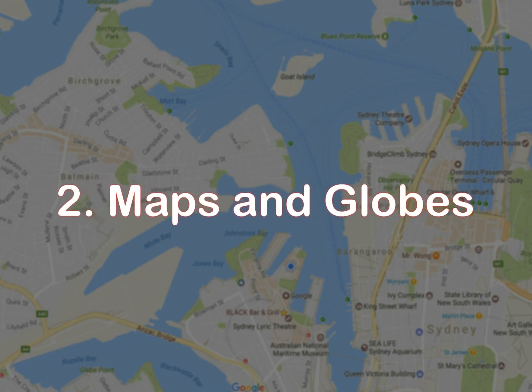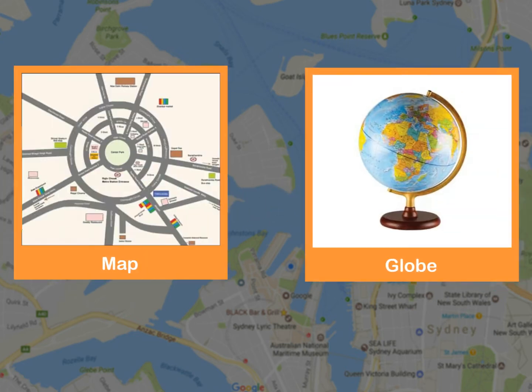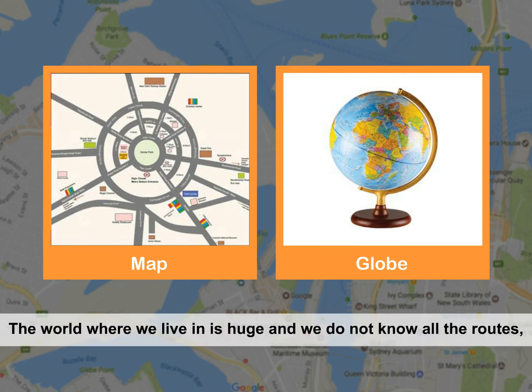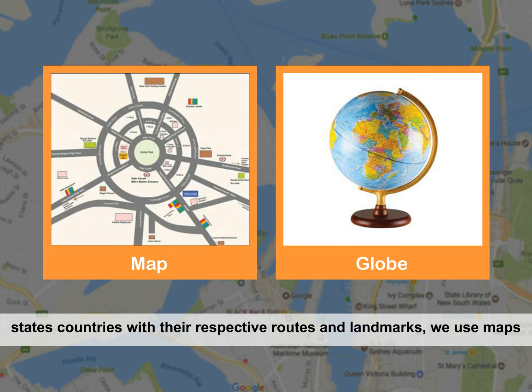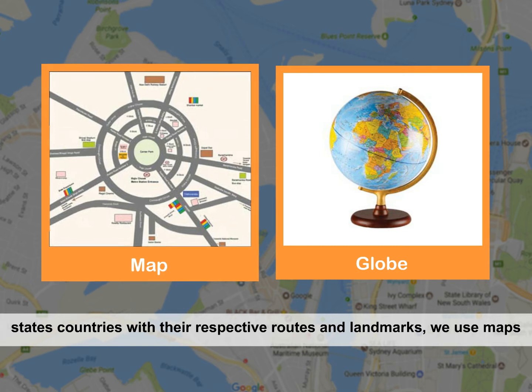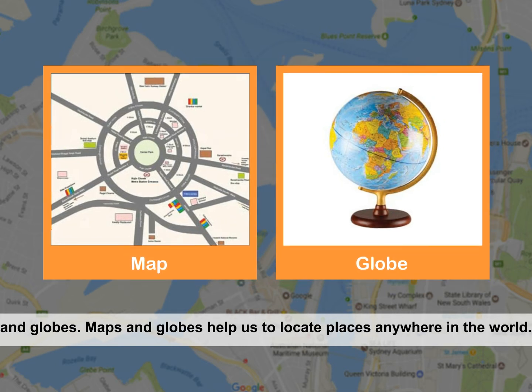Chapter 2: Maps and Globes. The world we live in is huge and we do not know all the routes, landmarks, etc. Thus, to keep us aware of all the cities, states, and countries with their respective routes and landmarks, we use Maps and Globes. Maps and Globes help us to locate places anywhere in the world.